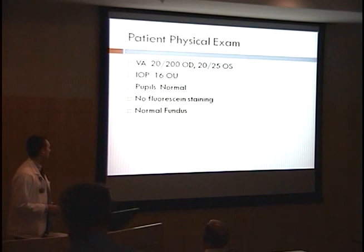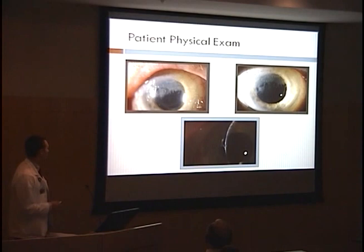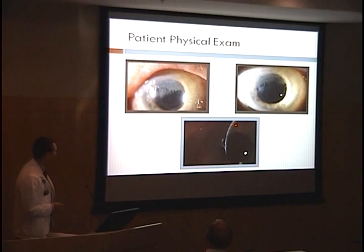Pictures were taken when he was seen initially here two weeks ago. As you can see, there's some corneal haze with scar in the epithelium and anterior stroma. There's also — it's a little difficult to see — but there's some neovascularization in the cornea.